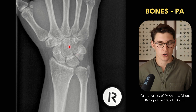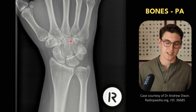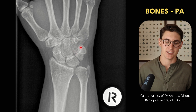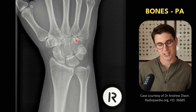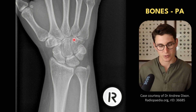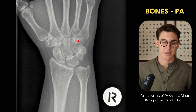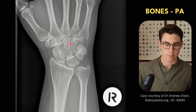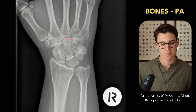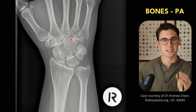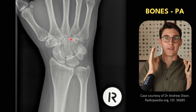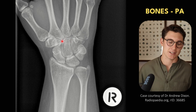Our distal row of carpal bones — starting medially and heading laterally. We have our hamate bone, which is quite unique. It has a projection of bone called the hook of the hamate. Then lateral to the hamate is our capitate bone — capitate meaning head shaped. It's the biggest, central bone of the wrist — the capital bone.